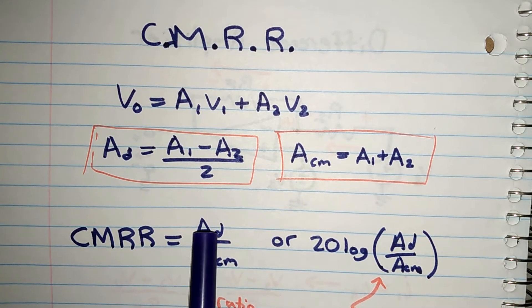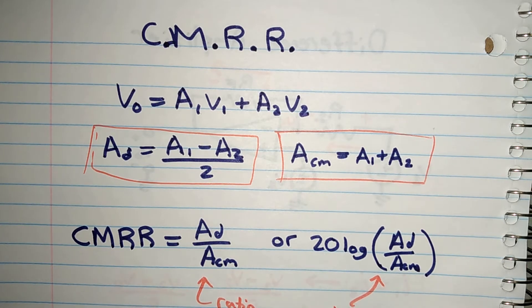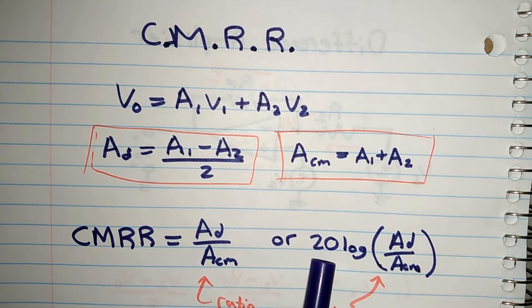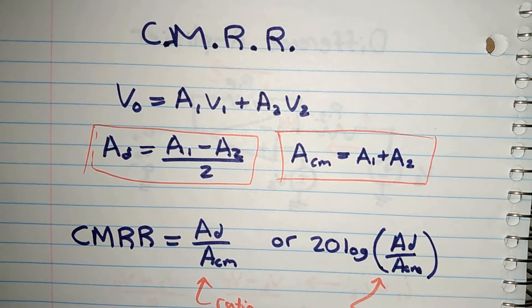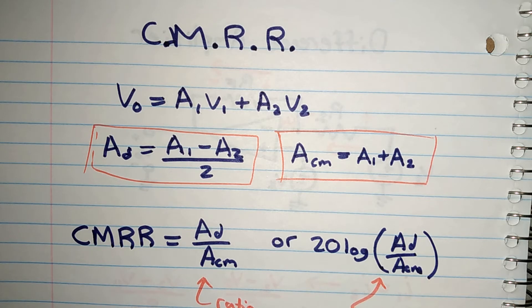But that's unitless. If we want in decibels, then we're going to say 20 log AD over ACM. This is just standard. That's what we defined reduction ratio to be.